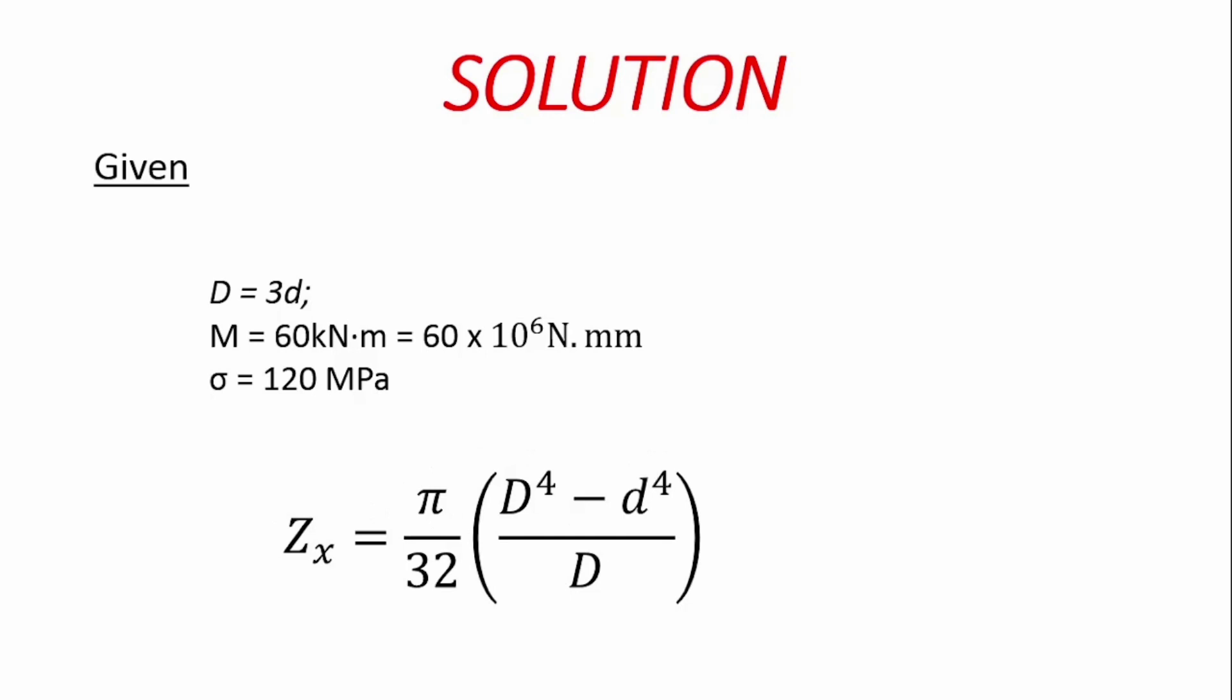We are going to be using the section modulus of the beam equation. Zx, which is section modulus, is equal to π/32 × (D^4 - d^4)/D. This equation is useful for hollow circular beams.